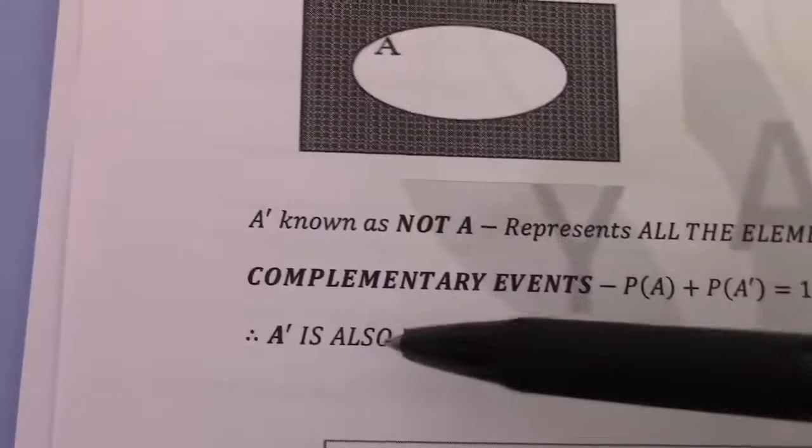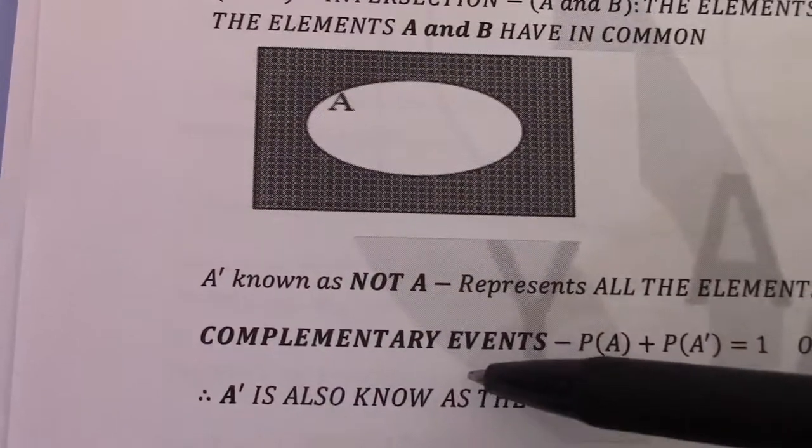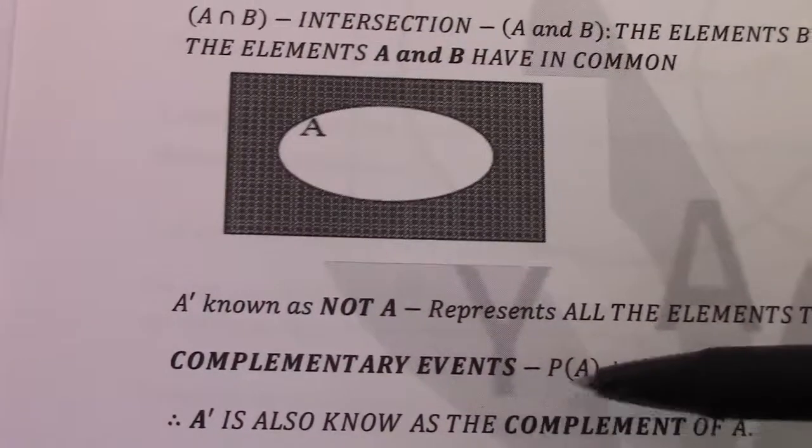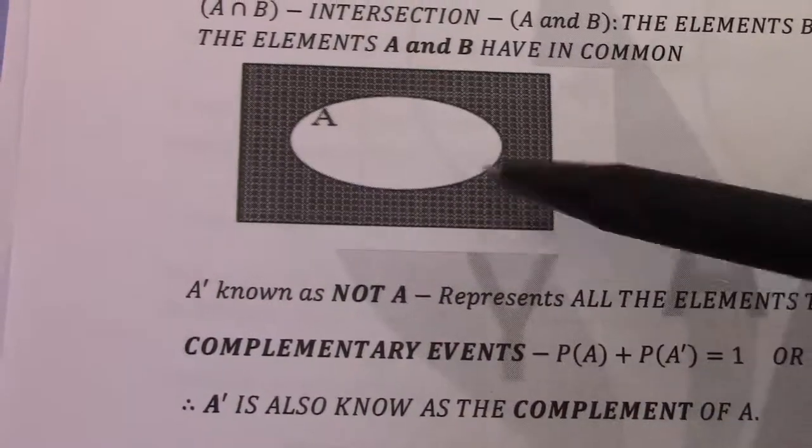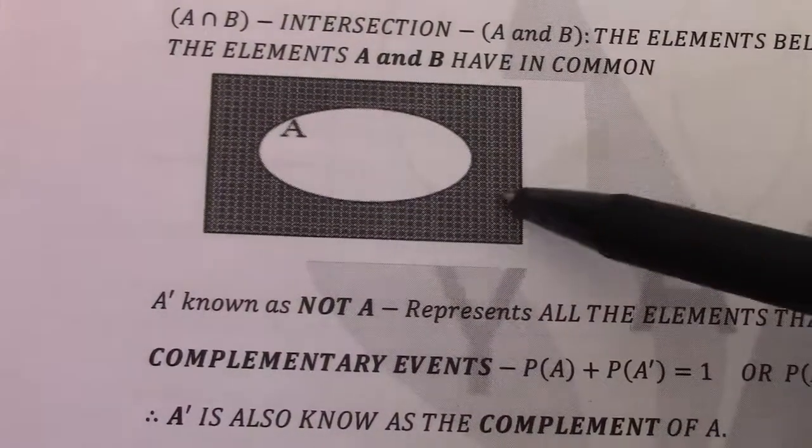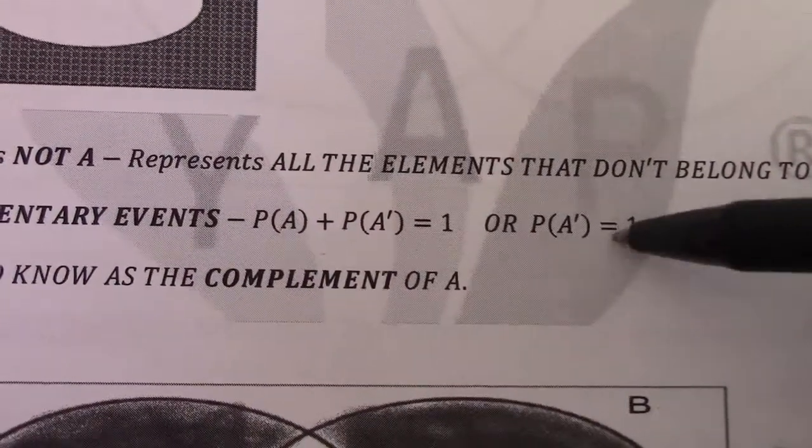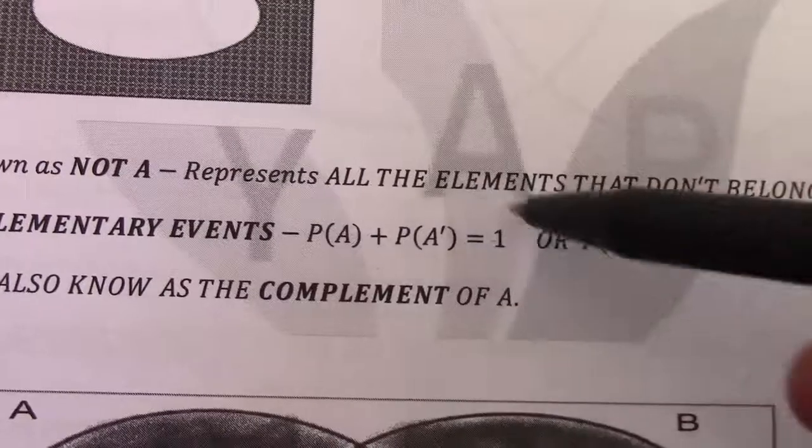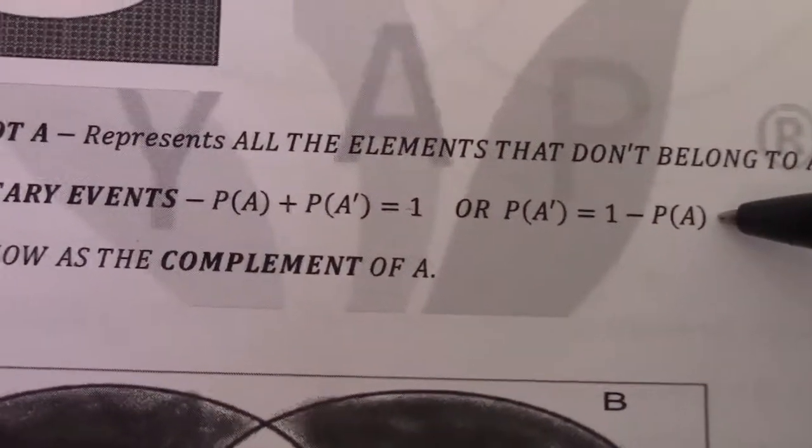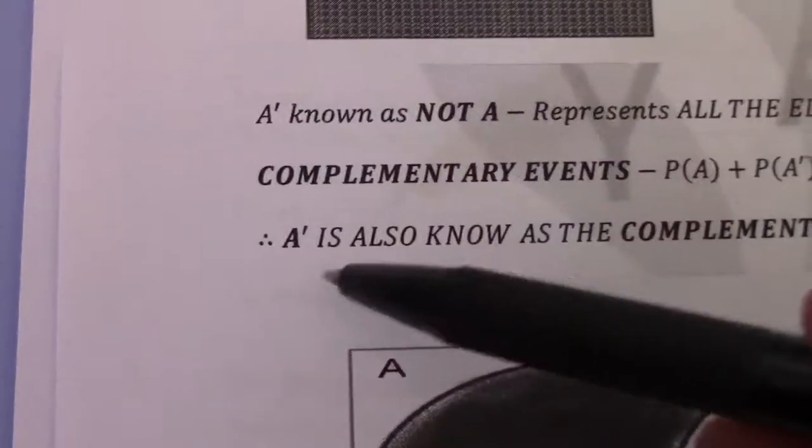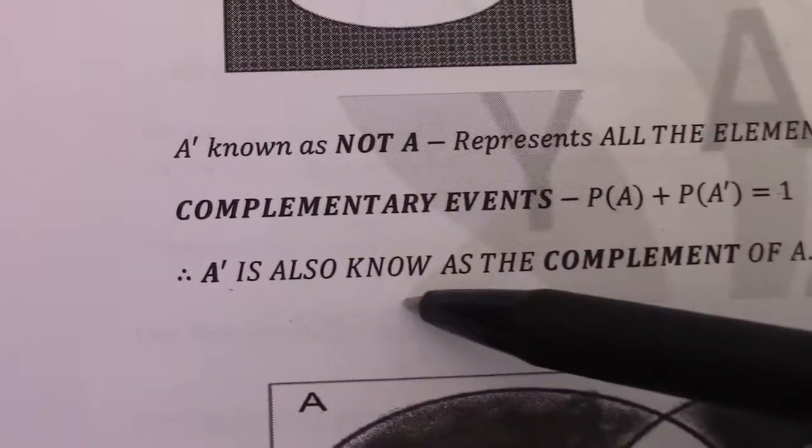Now, complementary events. We would say the probability of A plus the probability of not A must always equal 1. Or we can say probability of not A equals 1 minus probability of A. Not A is also known as the complement of A.